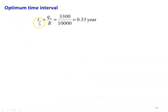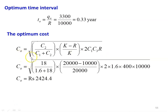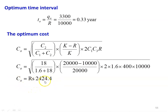Optimum time interval TO = QO/R = 3,300/10,000 = 0.33 years. Optimum cost CO = √[C2/(C1 + C2) × (K − R)/K × 2C1C3R]. Substituting: √[18/(1.6 + 18) × (20,000 − 10,000)/20,000 × 2 × 1.6 × 400 × 10,000] = ₹2,424.4. These are all the various parameters calculated for Model 4.